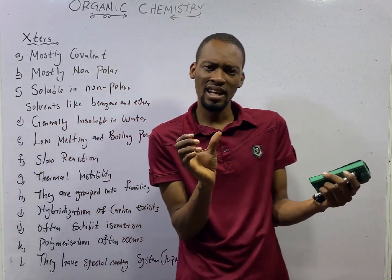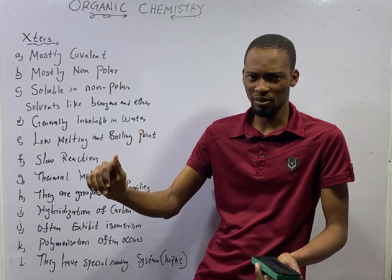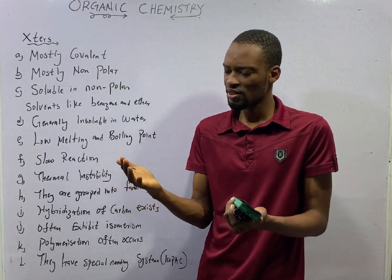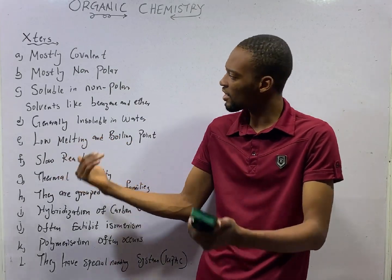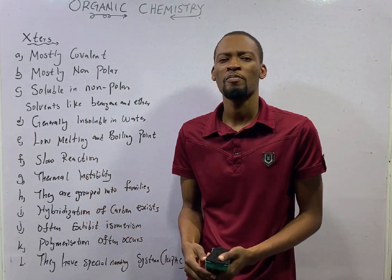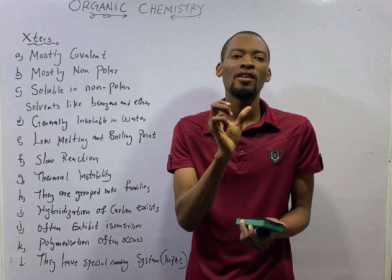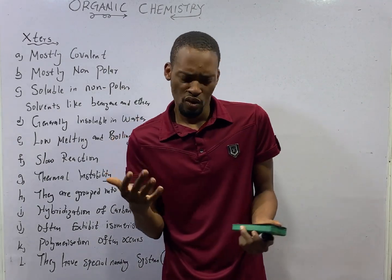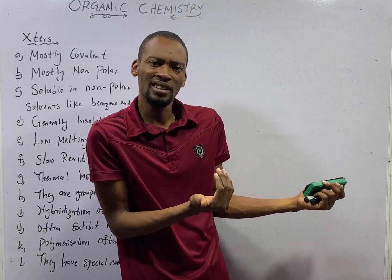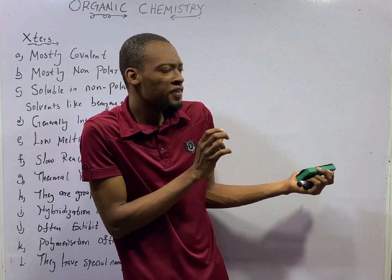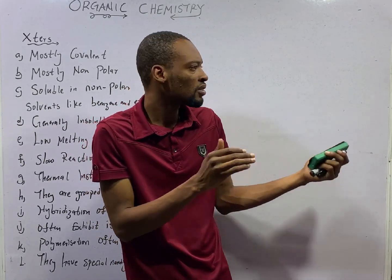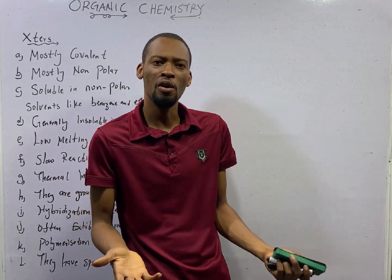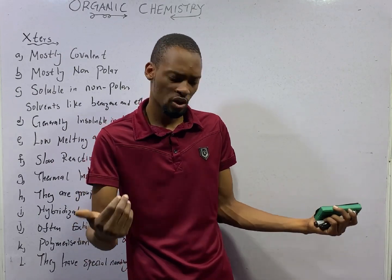Covalent bonding has to do with sharing of electrons. In ordinary covalent bonding, the electrons shared are donated equally by the sharing parties. But for dative bonding or coordinate covalent bonding, one of the species or one of the elements involved in the bonding donates most of the electrons — it calls the second one to just come and enter. I'm the one donating all of the electrons; there is no equal sharing.